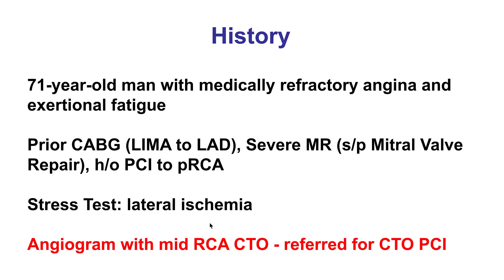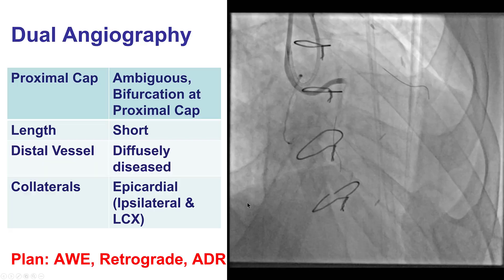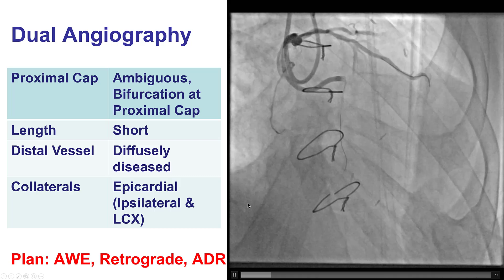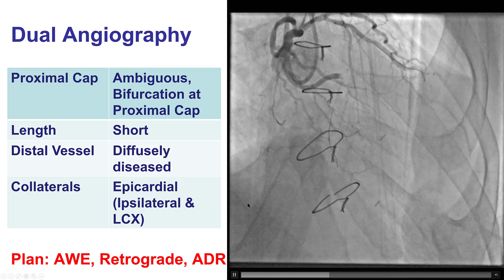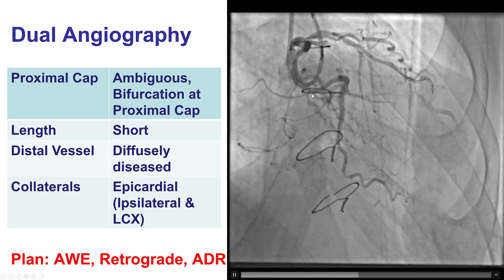The patient presented with medically refractory angina. He did have previous coronary bypass with LIMA to LAD as well as mitral valve repair, and he was found to have a right coronary artery CTO that was considered to be the culprit lesion for his symptoms. He was referred for PCI of the right coronary artery CTO, and this is the dual injection.